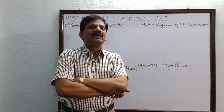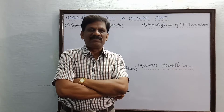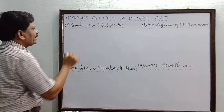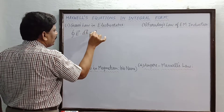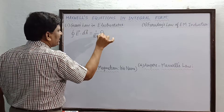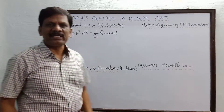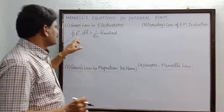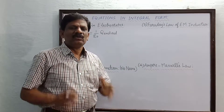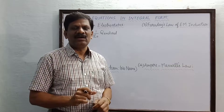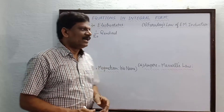First we will discuss Gauss law in electrostatics. In the first chapter on electrostatics, we studied the relationship between the total electric flux and the net charge in a Gaussian surface. Gauss law in electrostatics is given by: closed integral E dot dA equals one by epsilon naught times the total or net charge enclosed. The left-hand side is the electric field, the right-hand side is the net charge enclosed.